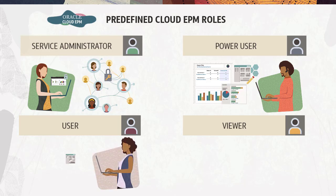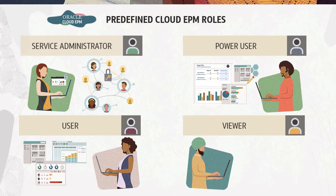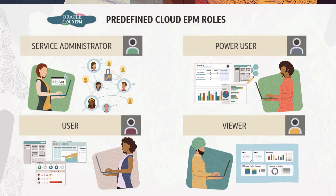Users can enter and submit data for approval, analyze forms using ad hoc features, and drill through to the source system. Users can view reporting content for which they have access. The viewer views and analyzes data through forms and ad hoc grids. A viewer can't enter data in the system.